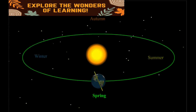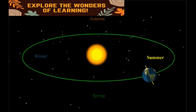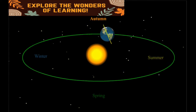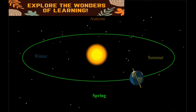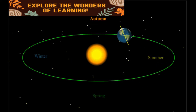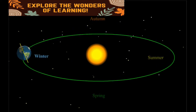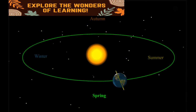Revolution causes a change in seasons to take place, such as summer, autumn, winter, and spring. In this way, the change in seasons occurs on the earth's surface.